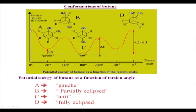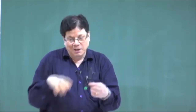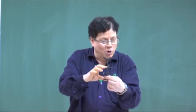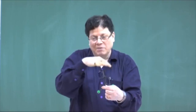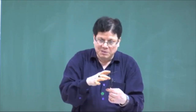If we start with the fully eclipsed form, it will have the highest energy. That is easy to understand because two methyls are eclipsing each other, so there will be van der Waals repulsive forces acting on each other — unlike ethane where only hydrogens were involved. This contributes enormously to the energy of the system. So this is the highest energy form: apart from bond opposition strain, the methyl-methyl steric interaction and the van der Waals repulsive force contribute a major portion of the energy.